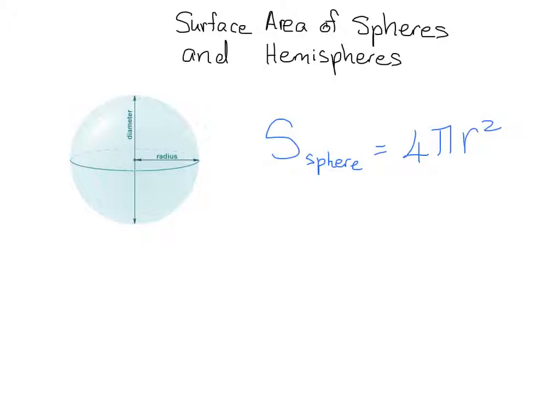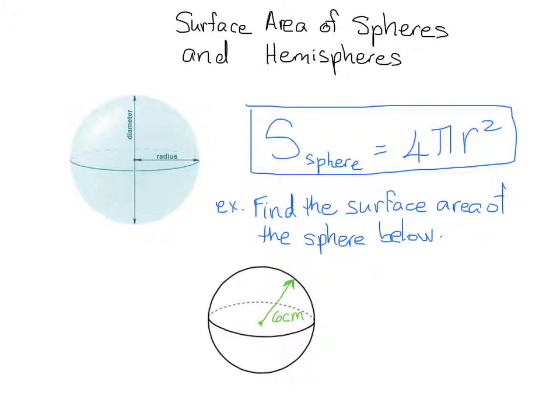So now that we know how to find the surface area of a sphere, let's go ahead and try an example. So here we have a sphere, and as you can see, the radius is 6 centimeters.